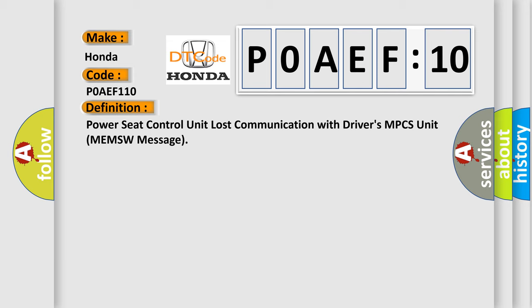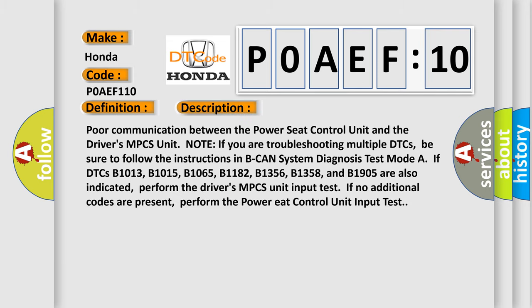The basic definition is Power Seat Control Unit Lost Communication with Driver's MPCS Unit MEMSW Message. And now this is a short description of this DTC code: Poor communication between the power seat control unit and driver's MPCS unit.